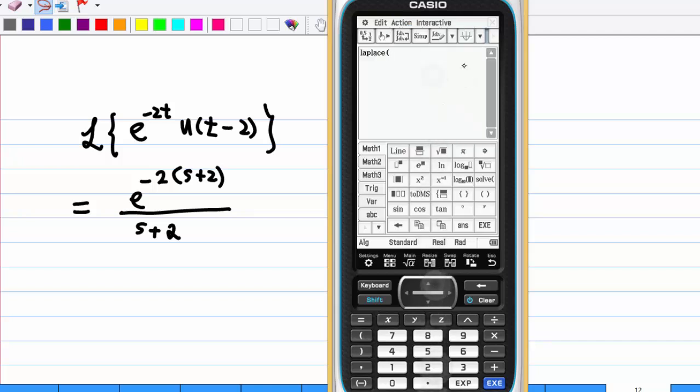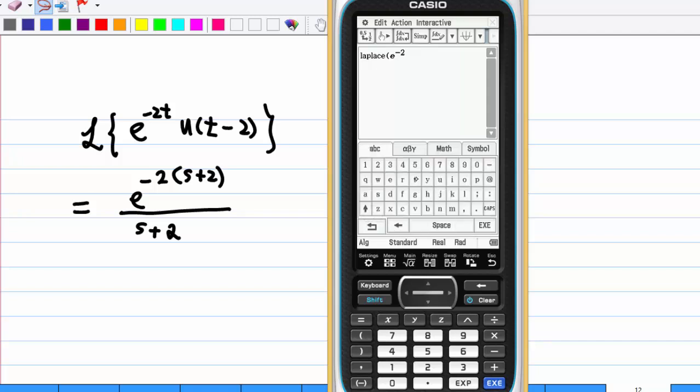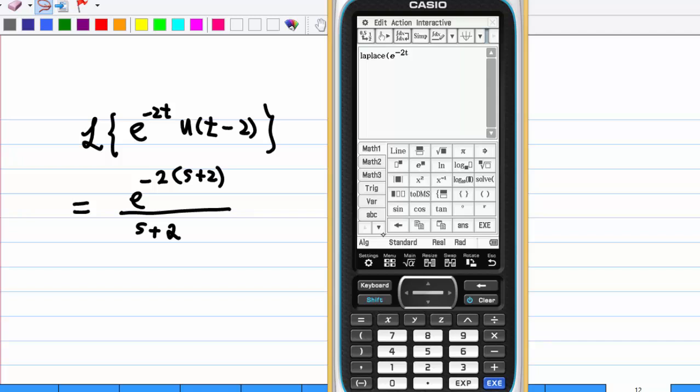Then, input e to the minus 2t, which I can enter through the keyboard and input a t using alphabet. And then, move down and multiply with Heaviside unit step function, which I can use the keyboard again and go to advanced, math tool.